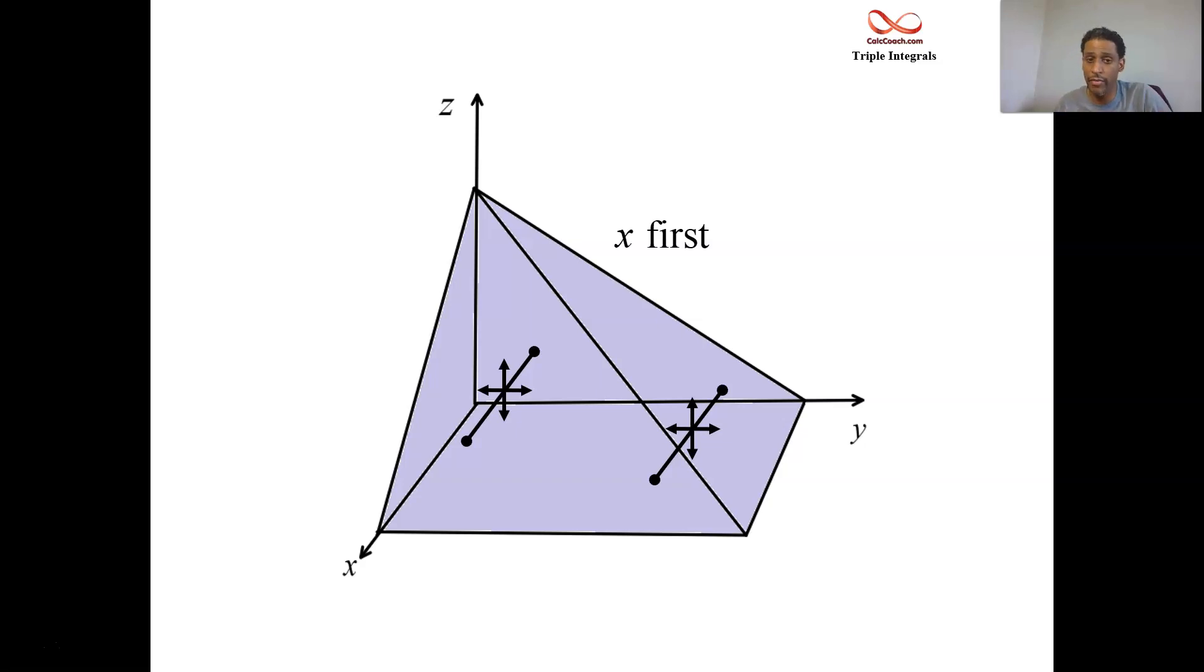So it's very viable to do x first. No matter where you're at in that shape, moving it in y and moving it in z, the back is always the yz plane. And the front is always this front plane that will give a name in a second.